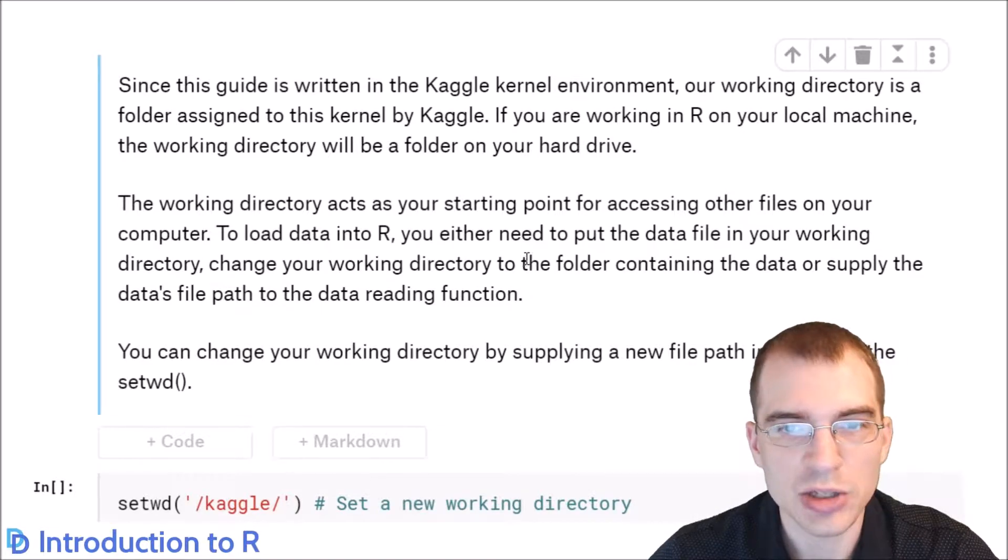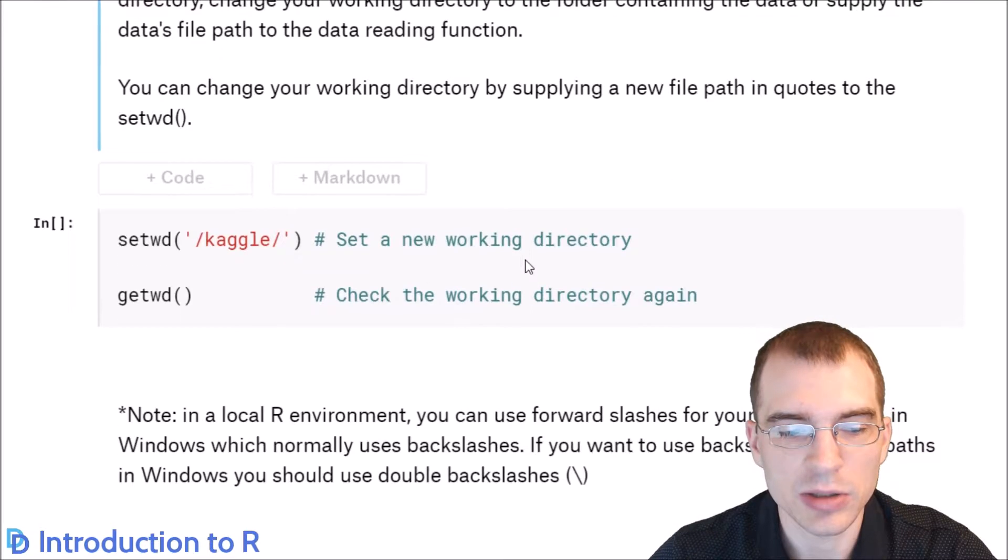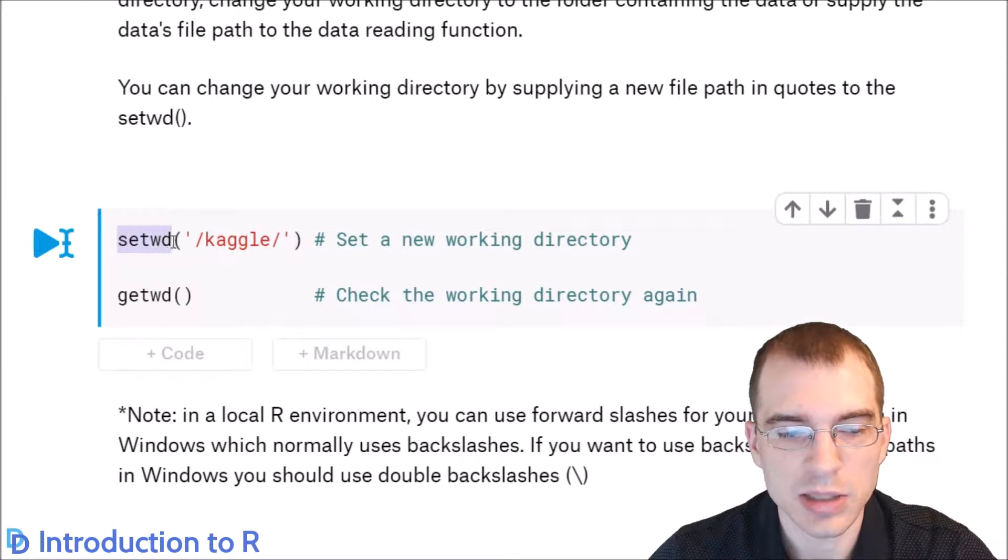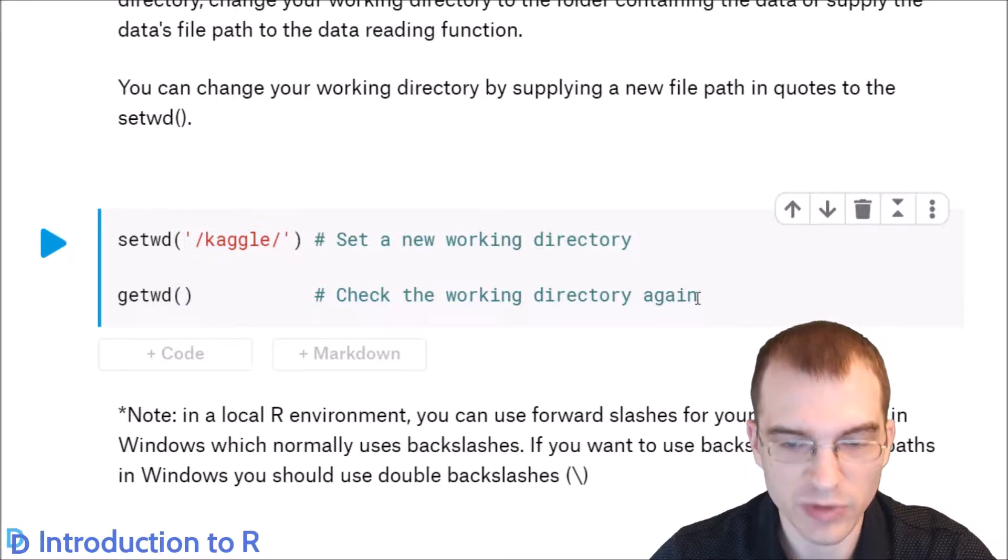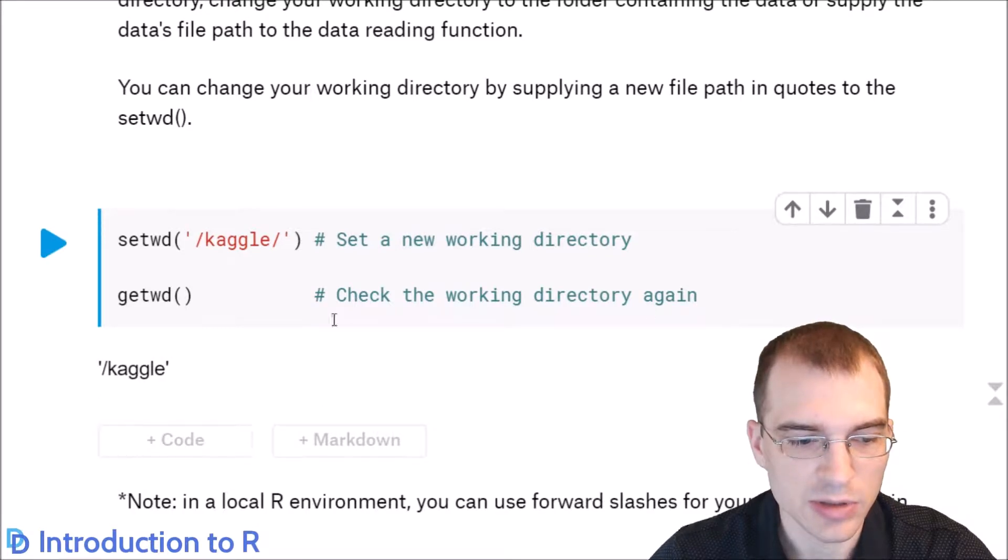You can change your file path in R by using the setwd function, or set working directory. Here, we are setting the working directory to just the Kaggle folder, so we're going up a level. We'll check the working directory again to confirm that we've changed the directory successfully. Now we're just in the Kaggle folder.